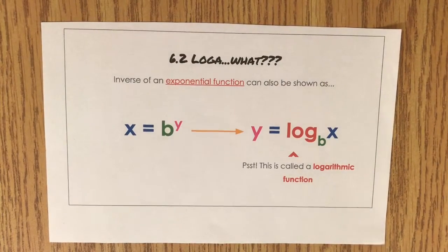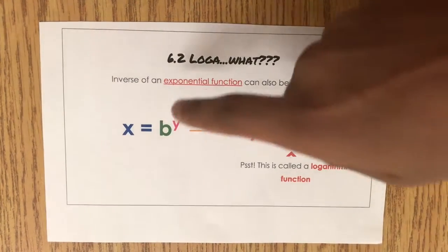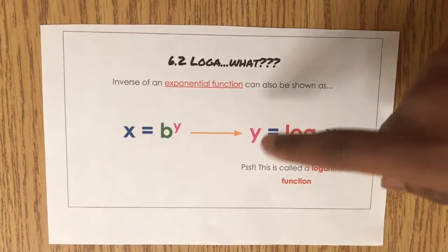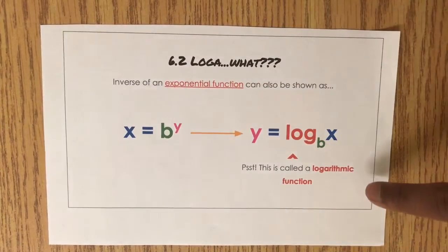In section 6.2, we covered logarithms. For the inverse of an exponential function, it can be expressed in two ways: x equals b to the y and y equals log x base b, which is also known as a logarithmic function.